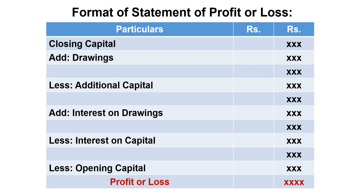This is opposite to the balance sheet treatment. In a balance sheet, capital has net profit added and drawings deducted. In the Statement of Profit format, we start with closing capital, add drawings, less additional capital, less opening capital to find profit. The adjustments in the Statement of Profit are the reverse of those in the balance sheet.